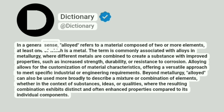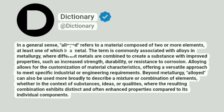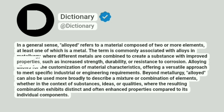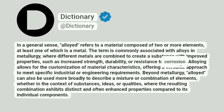In a general sense, alloyed refers to a material composed of two or more elements, at least one of which is a metal. The term is commonly associated with alloys in metallurgy, where different metals are combined to create a substance with improved properties, such as increased strength, durability, or resistance to corrosion.